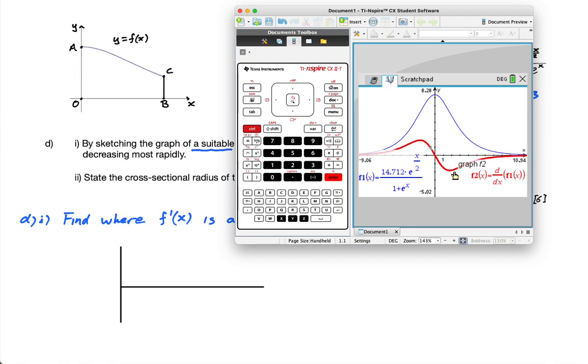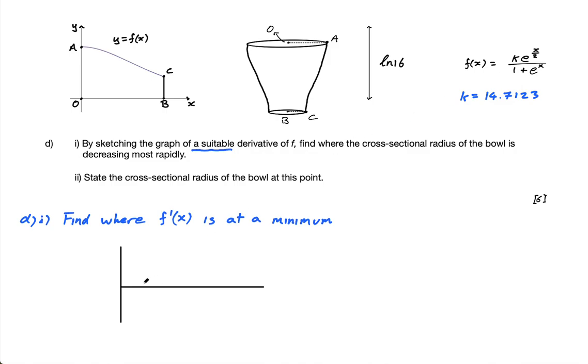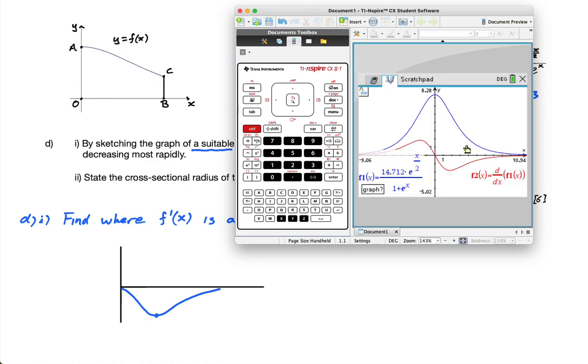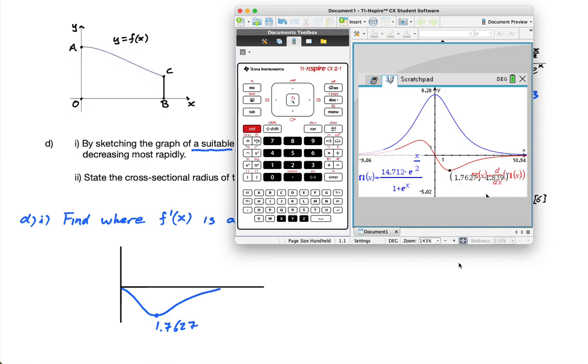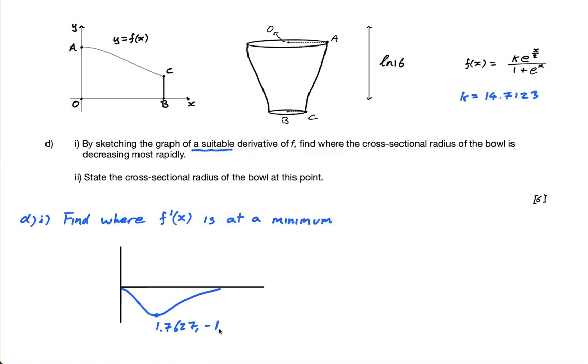So the derivative comes down there and up here like this. Now I want, so something like this. Actually let me just make that blue, so it comes down here like this, and then goes up here, and kind of approaches this but doesn't touch it. And this point here, this minimum is, well let's find it. Analyze graph, minimum, which graph, well this one, lower bound, upper bound, and this point is 1.7627, comma, minus 1.839. That's that point there.